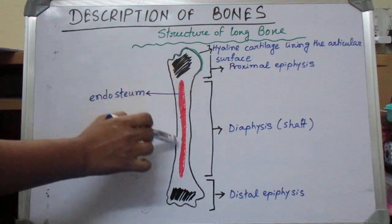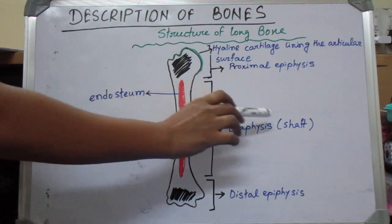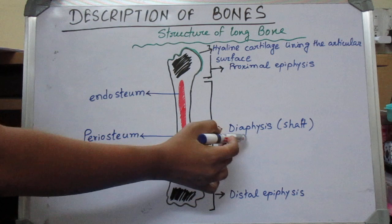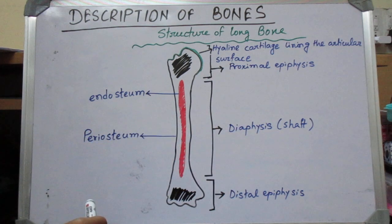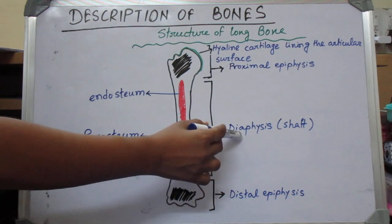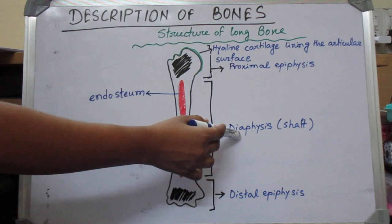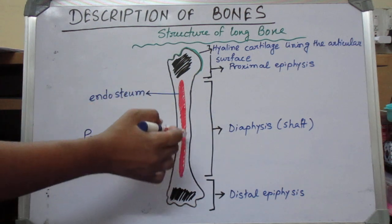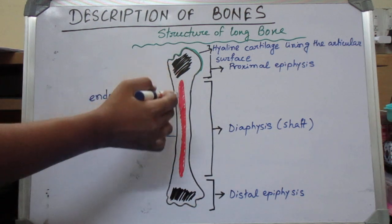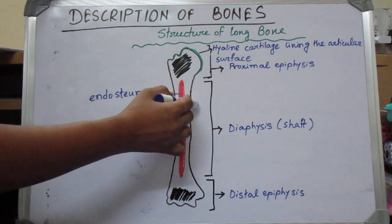The shaft is known as the diaphysis — shaft or body is known as diaphysis. It forms from the primary center of ossification. This shaft has a central medullary cavity and an outer layer of compact bone.